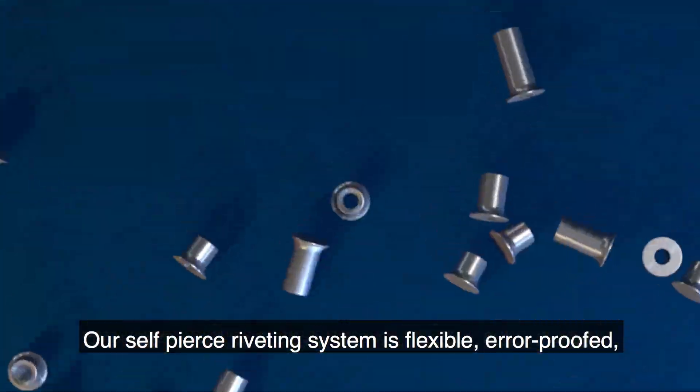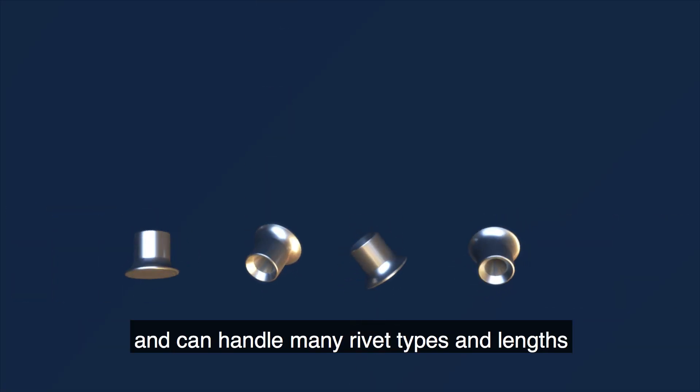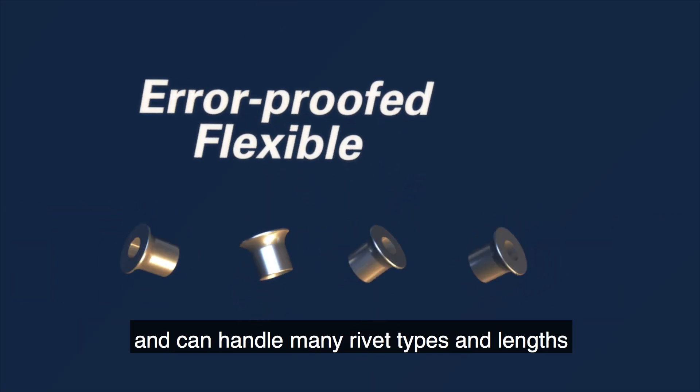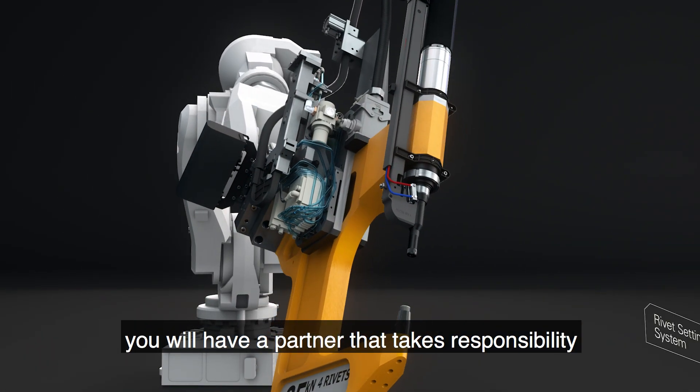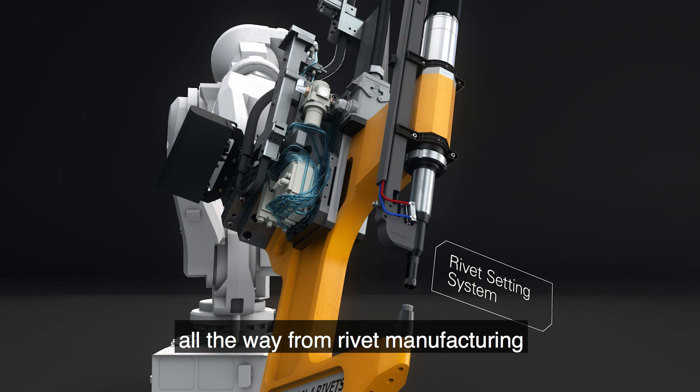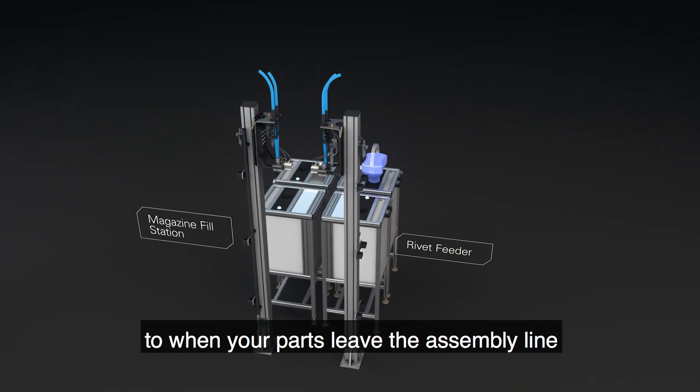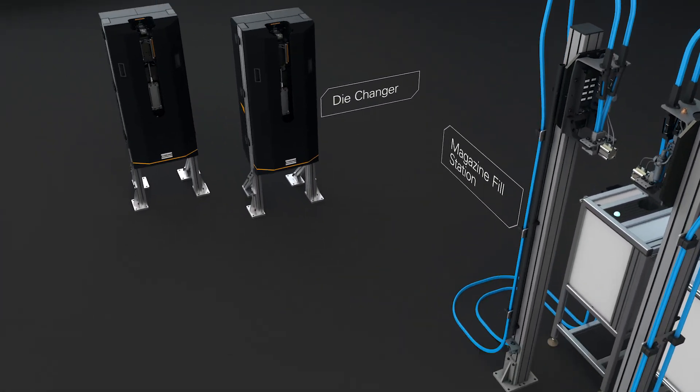Our self-pierced riveting system is flexible, error-proof, and can handle many rivet types and lengths. With a complete solution from Atlas Copco, you'll have a partner that takes responsibility all the way from rivet manufacturing to when your parts leave the assembly line.